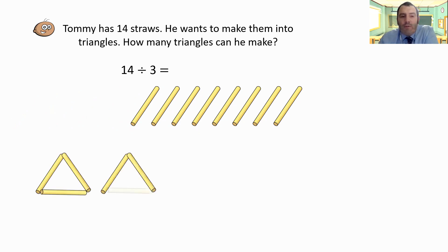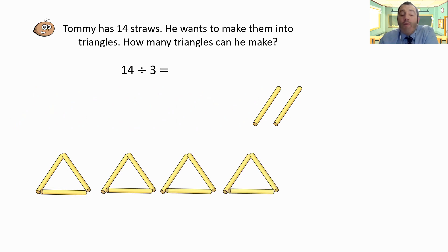There's one triangle, two triangles, three triangles, four triangles, and no, I can't quite make it to another triangle. I've got two left over this time. We move on. We've got four remainder two as our answer.